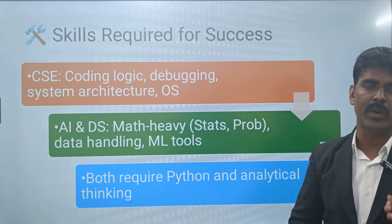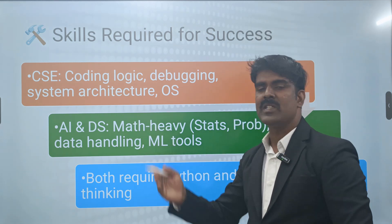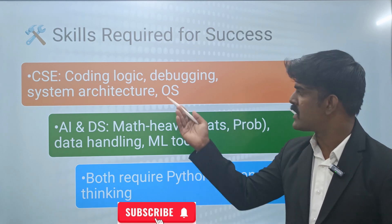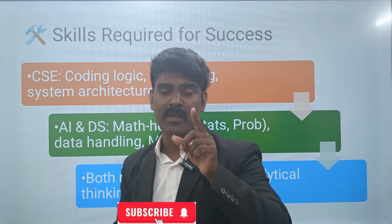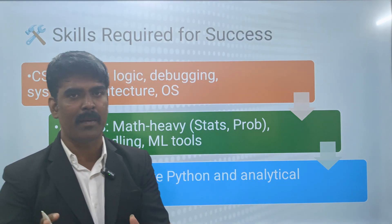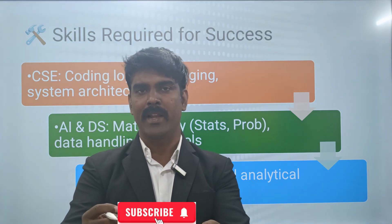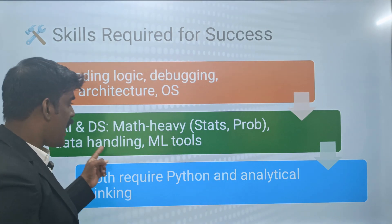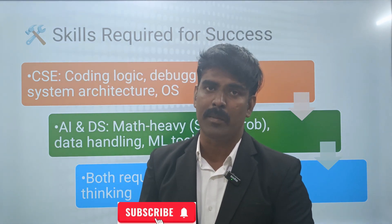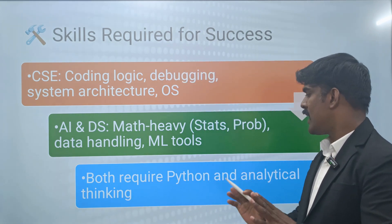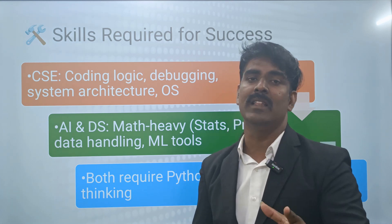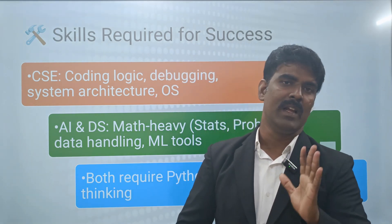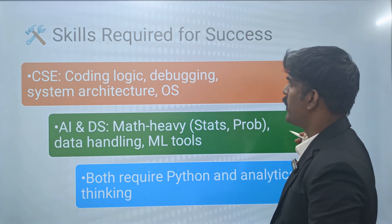What skills are required for success? For CSE, coding knowledge is very important, along with debugging, system architecture, and operating system knowledge — these skills lead to success in the CSE field. For AADS, statistics and analytics are key; statistics and probability are math-heavy, and math concepts, data handling, and machine learning tools are essential to shine in AADS. Both fields require Python and analytical thinking. With strong skills, you can aim for salaries ranging from a basic 5 to 10 lakhs up to 50 to 60 lakhs.